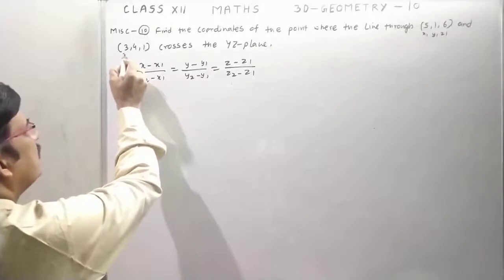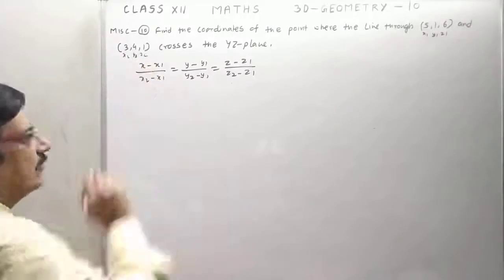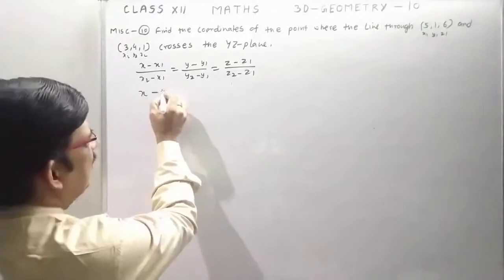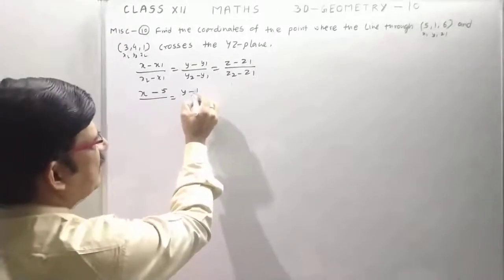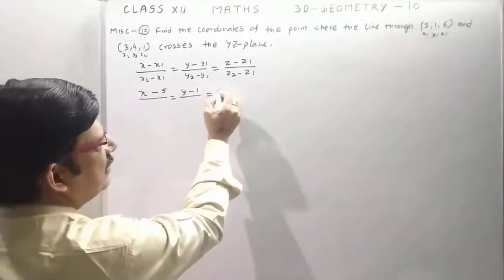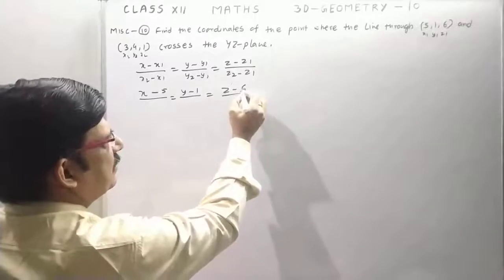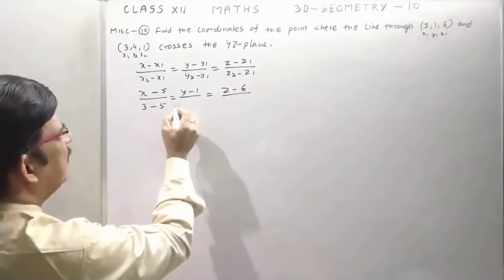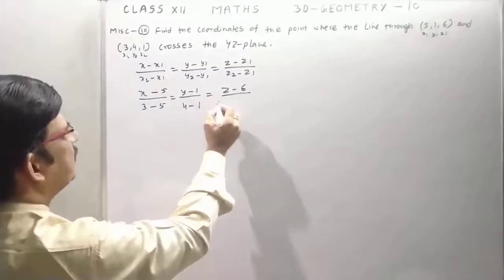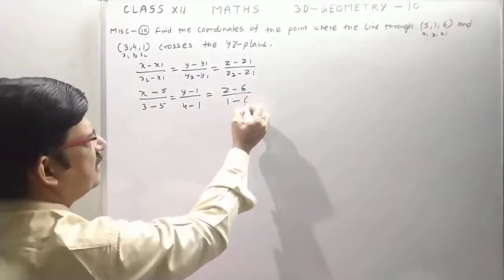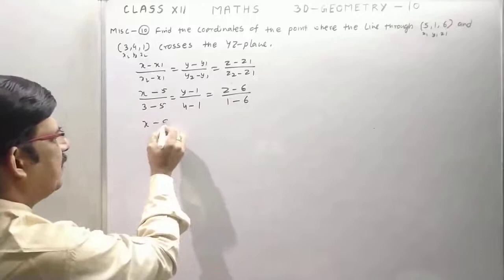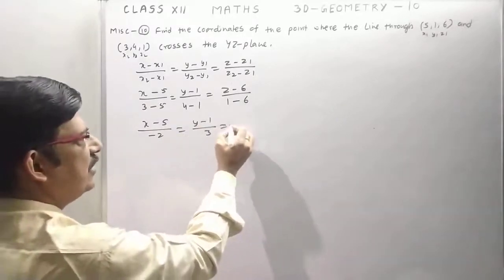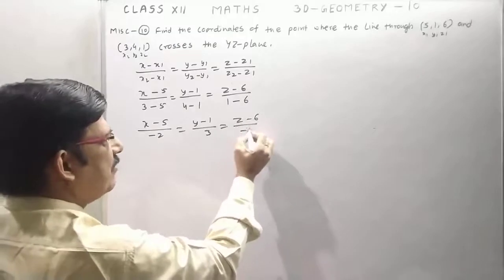Now substitute the values: (x minus 5) upon (y minus 1) upon (z minus 6) upon (x2 minus x1) which is 3 minus 5, (y2 minus y1) which is 4 minus 1, and (z2 minus z1) which is 1 minus 6. We get (x minus 5) upon minus 2 equals (y minus 1) upon 3 equals (z minus 6) upon minus 5.